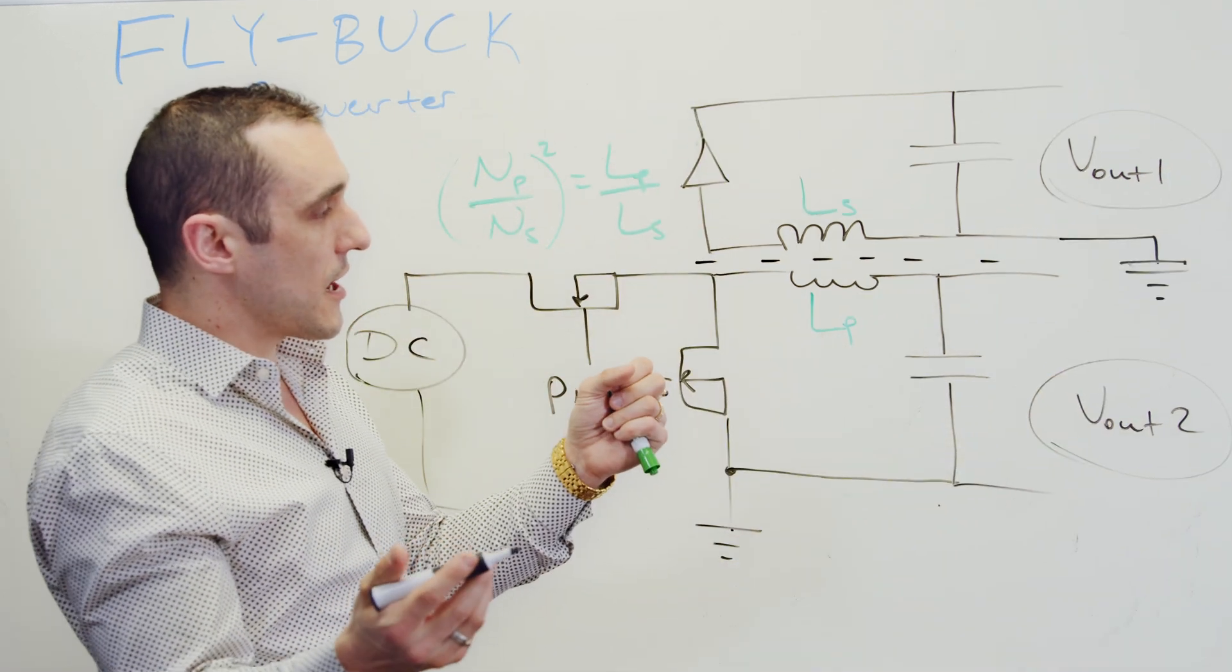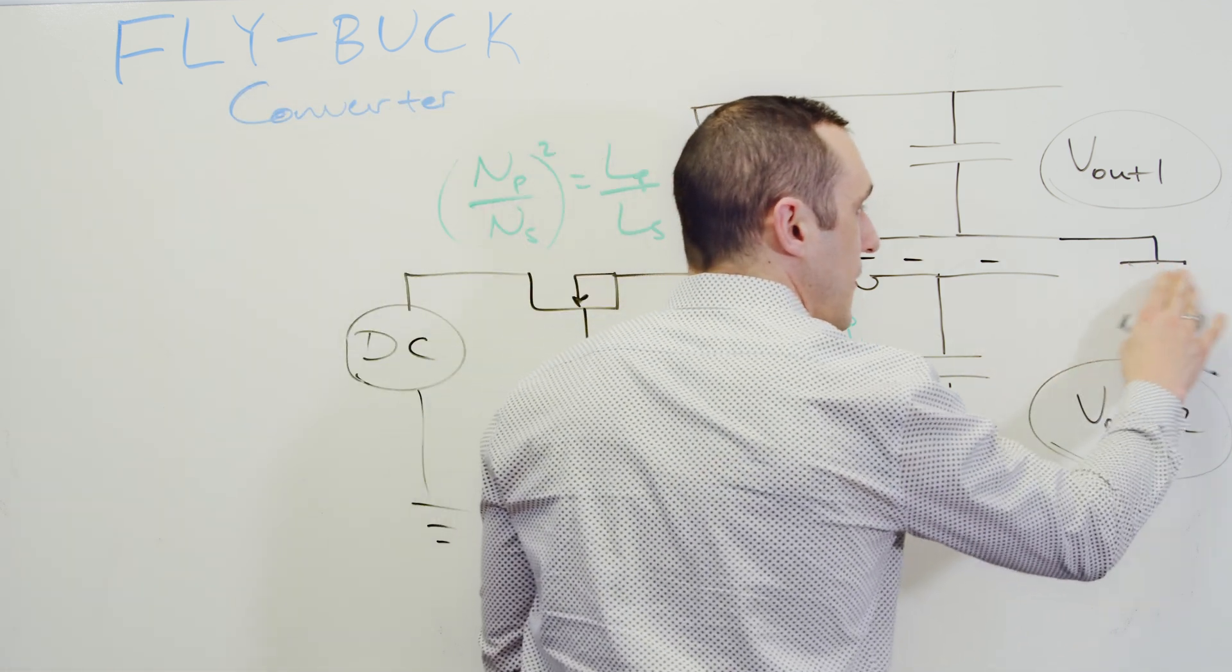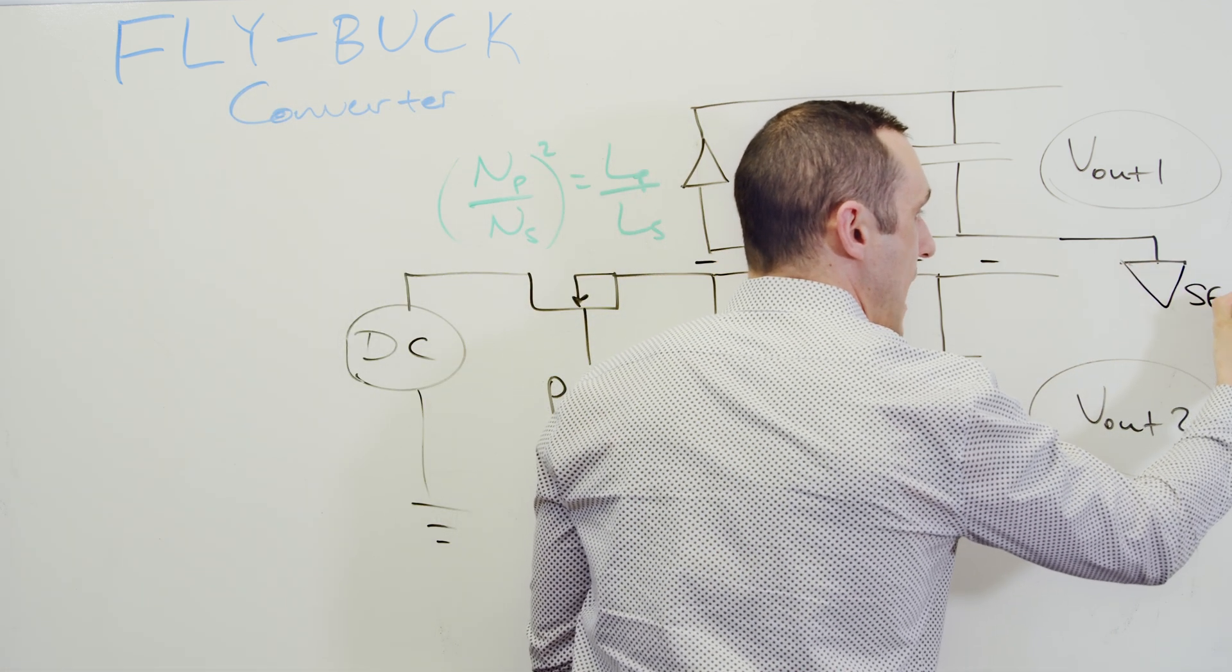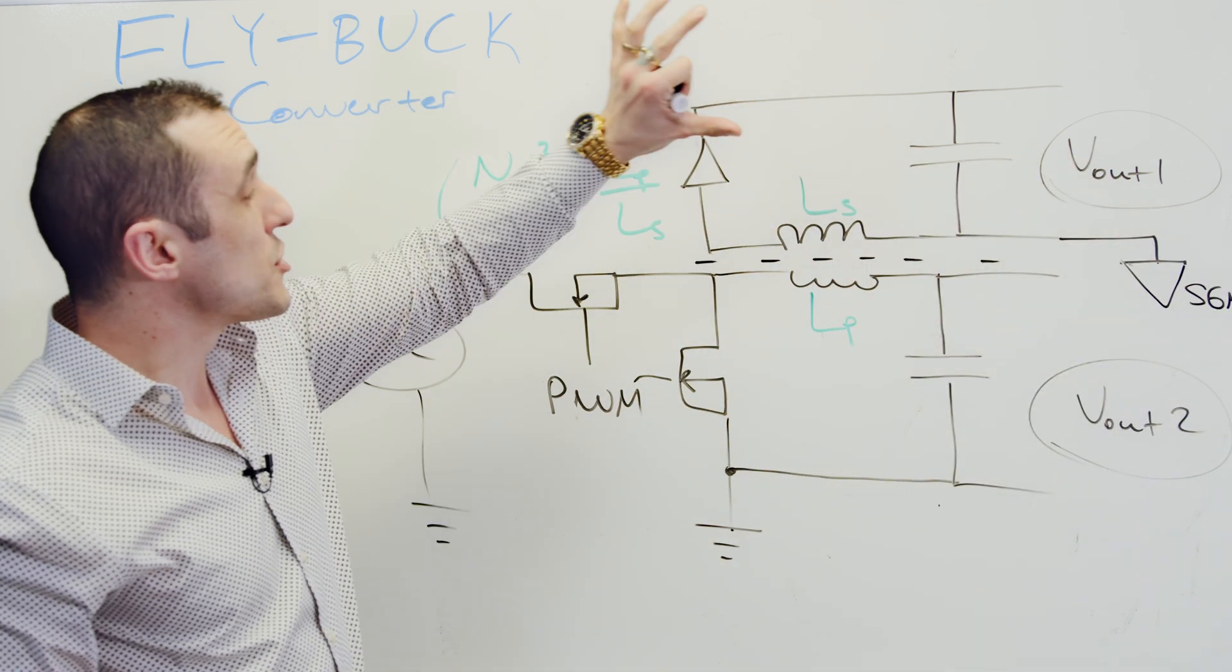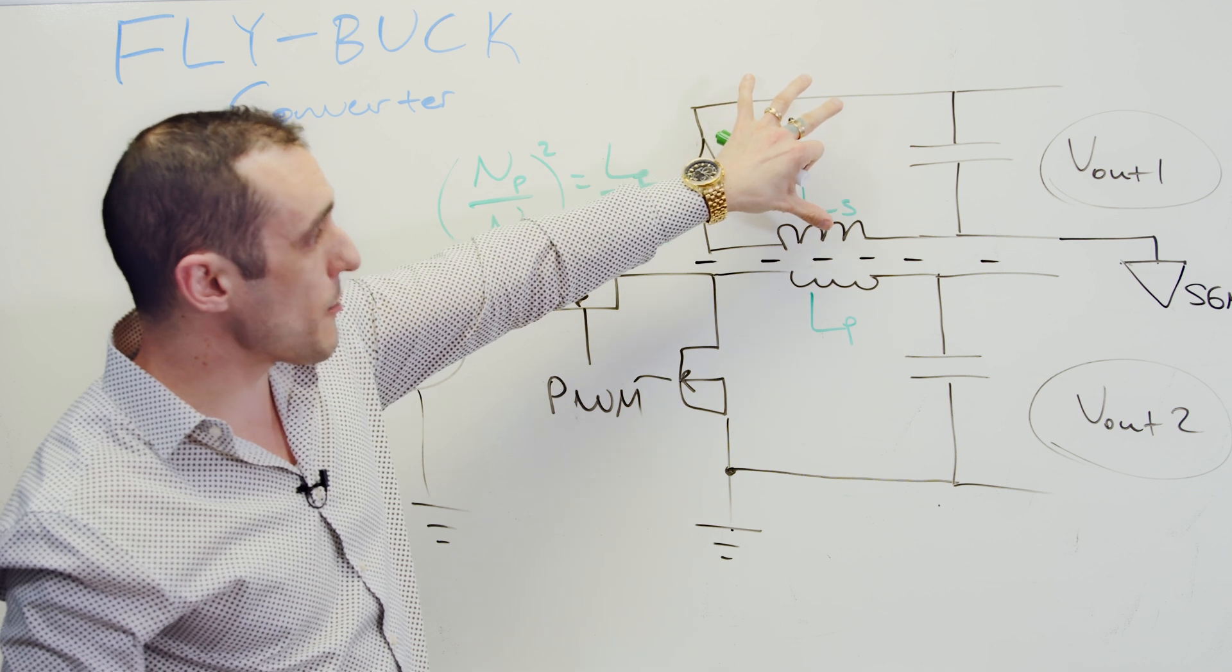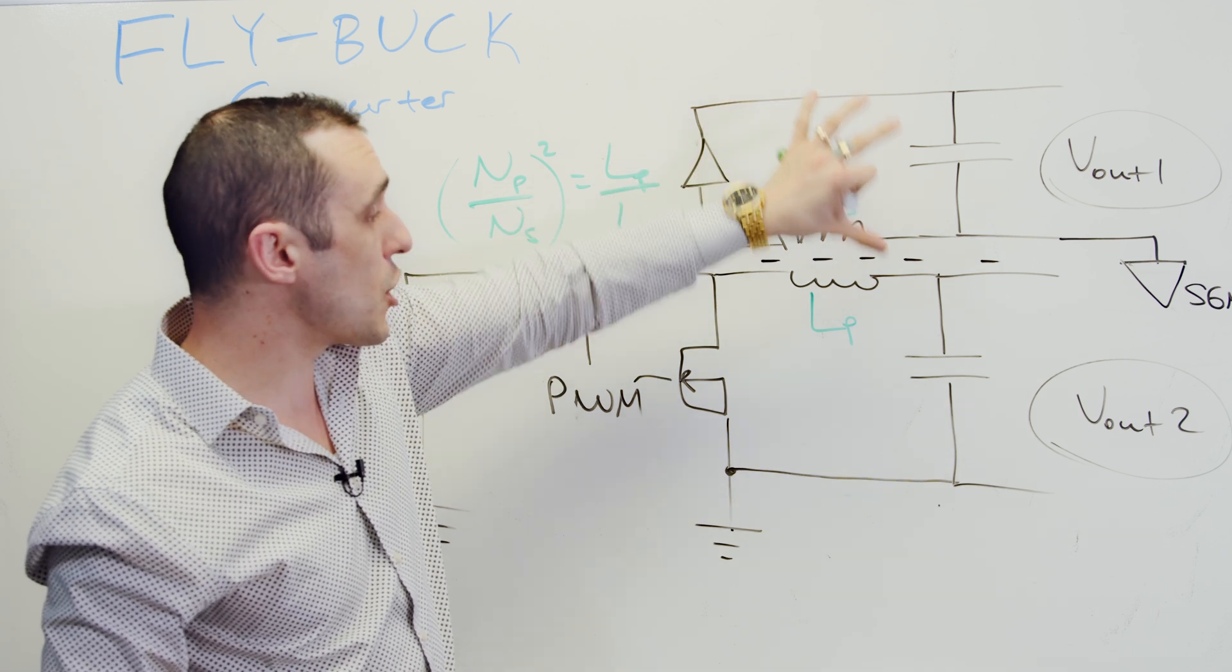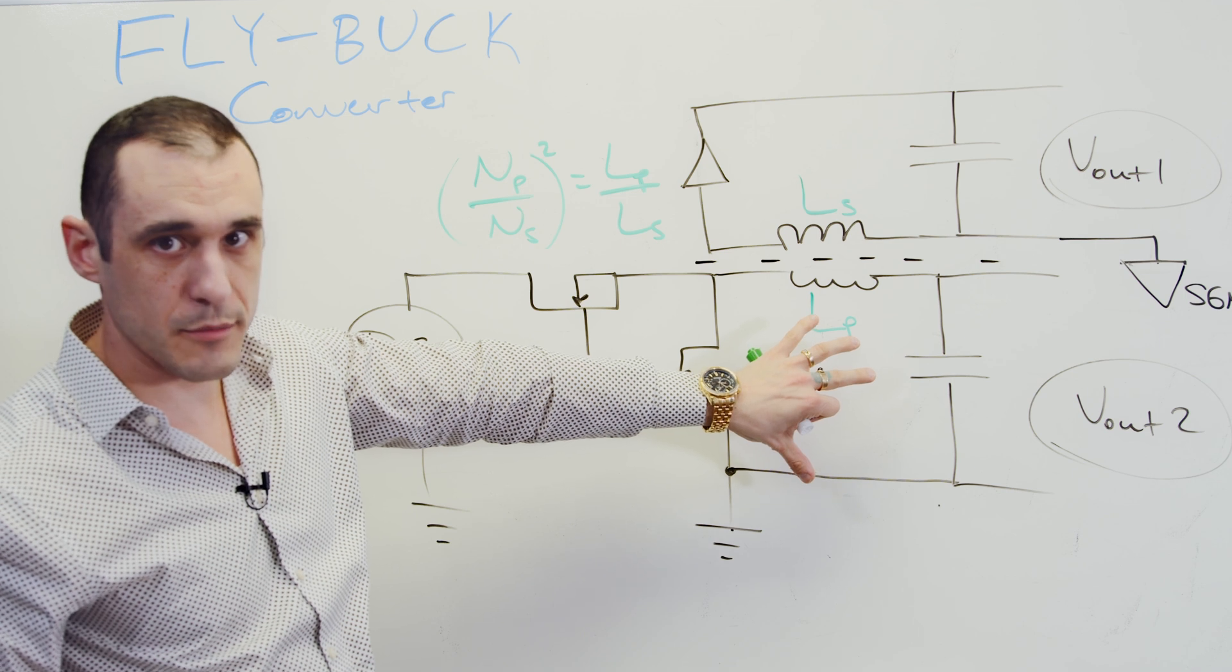but now I don't have a ground offset between these two sides of this power converter. So if you want galvanic isolation and you have a secondary ground like this, you would then have physically separate ground regions on the PCB. So this allows you to put a totally separate set of components on the PCB that are totally isolated from this first set of components.